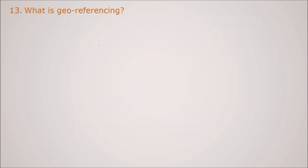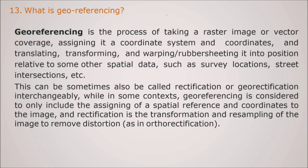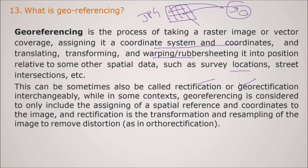What is georeferencing? See, you have a JPEG image. Now this image has no spatial relationship. It is not having any reference with any coordinate system which is referring to the earth coordinates. So when you place it on a globe, you don't know where it is going to be placed. But once it is referenced, means you have this latitude, longitude or PCS values. Once you place it here, it will fit to the actual location where it is going to be placed. So georeferencing is the process of taking a raster image or vector coverage, assigning it with certain coordinate system and coordinates, and then translating, transforming and warping or rubber sheeting it into position relative to some other spatial data such as survey location, street intersection. This can be sometimes called as rectification also or georectification interchangeably. So georeferencing and rectification are almost similar. While in some contexts georeferencing is considered to only include the assigning a spatial reference and coordinate to the image, while the rectification is the transformation and resampling of the image to remove the distortion.